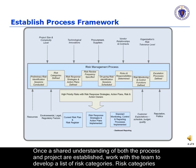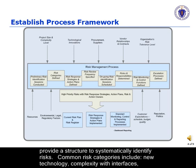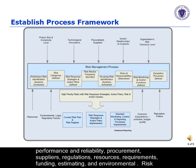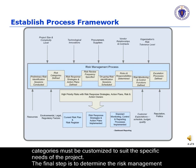Once a shared understanding of both the process and the project are established, work with the team to develop a list of risk categories. Risk categories provide a structure to systematically identify risks. Common risk categories include new technology, complexity with interfaces, performance and reliability, procurement, suppliers, regulations, resources, requirements, funding, estimating, and environmental risk. Risk categories must be customized to suit the specific needs of the project.